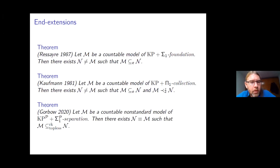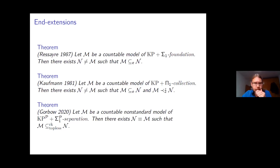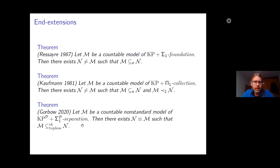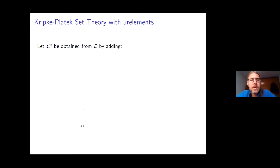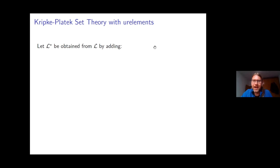The idea is to use Barwise's notion of the cover of an admissible set to produce end extensions of models of set theory. This is a part of Barwise's book that really does use urelements. I need to introduce KP with urelements. Let L* be obtained from the language of set theory by adding a new unary predicate U (to distinguish sets from urelements), a second binary membership relation E, and a unary function symbol F.